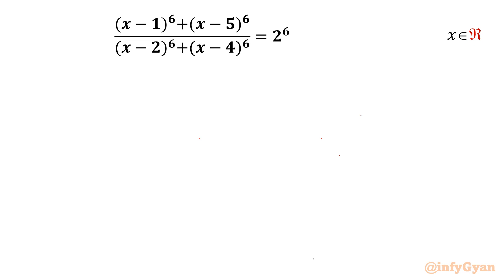Welcome back to Infigyan, my dear friends. Today in this video we are having one very interesting and challenging rational equation problem. It is (x minus 1)^6 plus (x minus 5)^6 over (x minus 2)^6 plus (x minus 4)^6, and the right hand side is 2^6. We have to find out all real solutions.